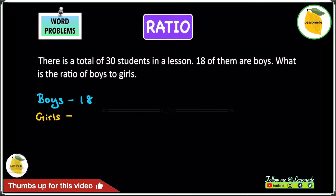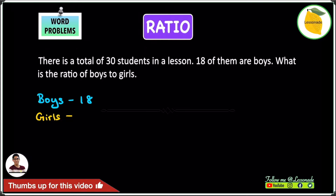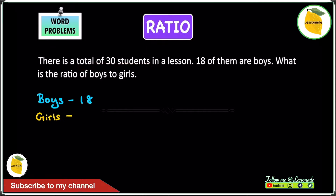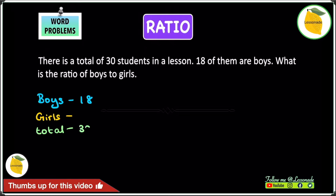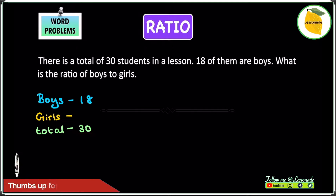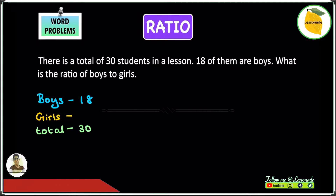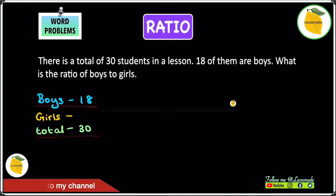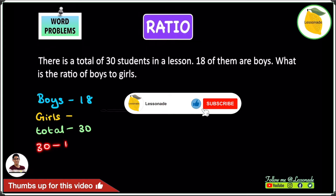Next we have to find the number of girls, but the question does not tell us the number of girls so we have to work that out. Before we do, we note that the total number of students is 30. So we have 18 boys and a total of 30 students. To find the number of girls, all we have to do is subtract the number of boys from the total: 30 minus 18, which gives us 12.